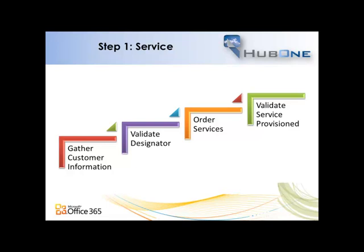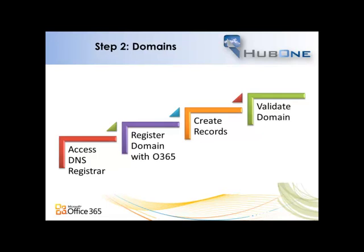Once the service is up and running we have Office 365. We're then able to work with domains. We request from the customer access to the DNS registrar, and if they don't provide that information we can inform them of the various records that need to be created. We register the domain with Office 365, make sure that works, create the records and validate that the domain is effectively set up as the first step before we move forward.